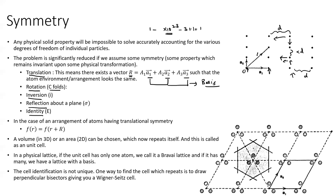Similar arguments apply for inversion, reflection about a plane, and identity — the act of doing nothing, which comes from group theory. For today's lecture, we will talk specifically about translational symmetry. Any symmetry tells you what sort of degeneracy, what sort of constant energies, and what sort of constant wave-vector–energy relationships we will have.